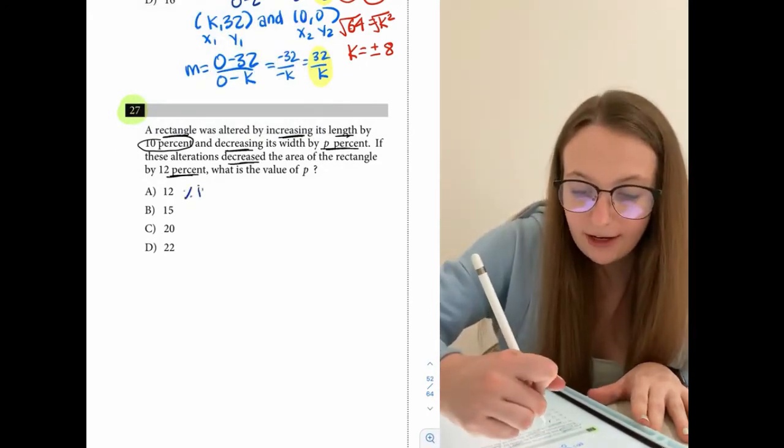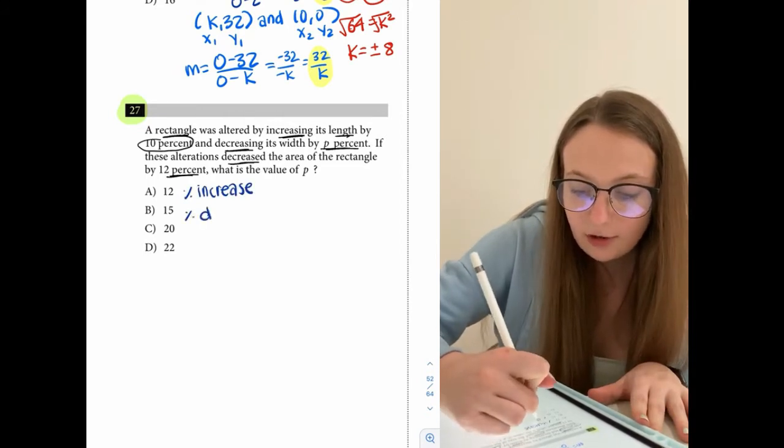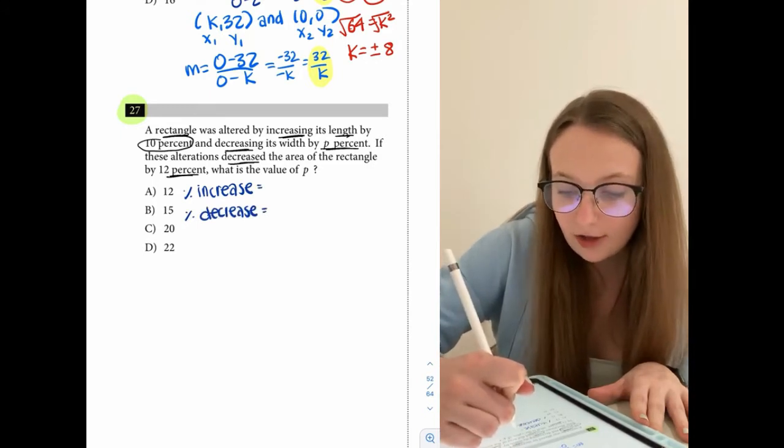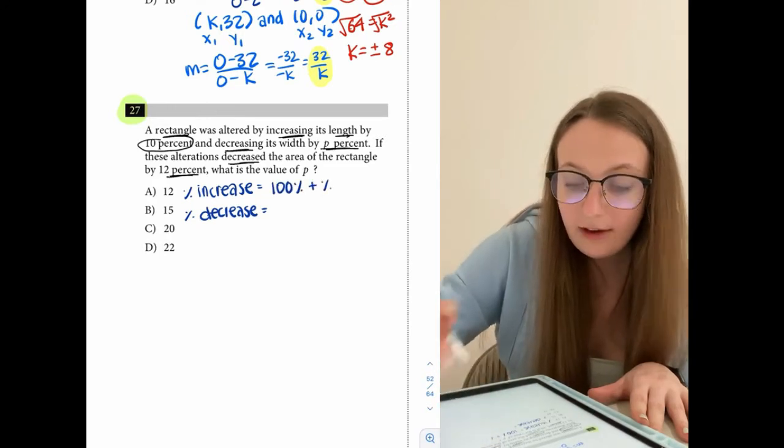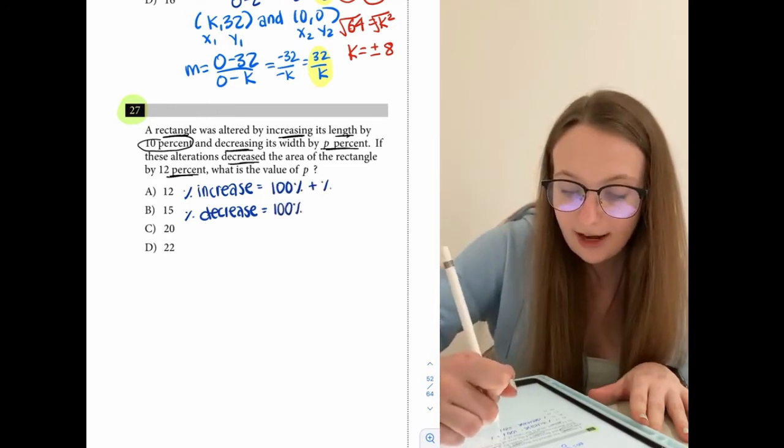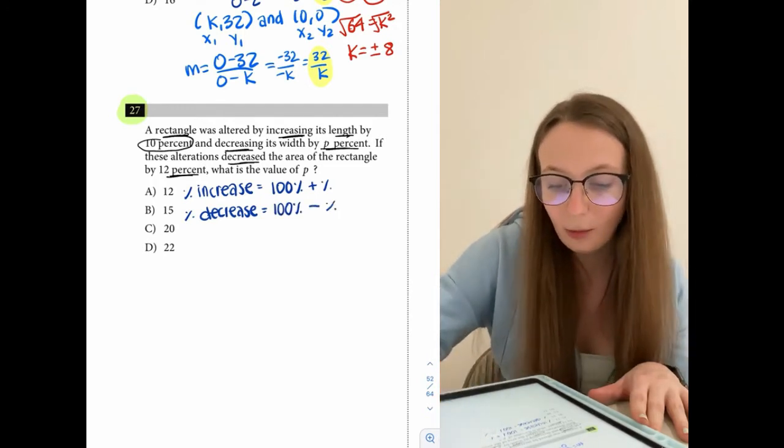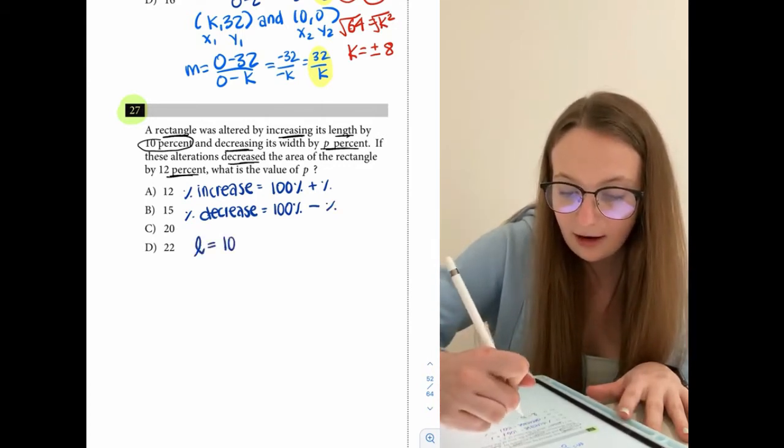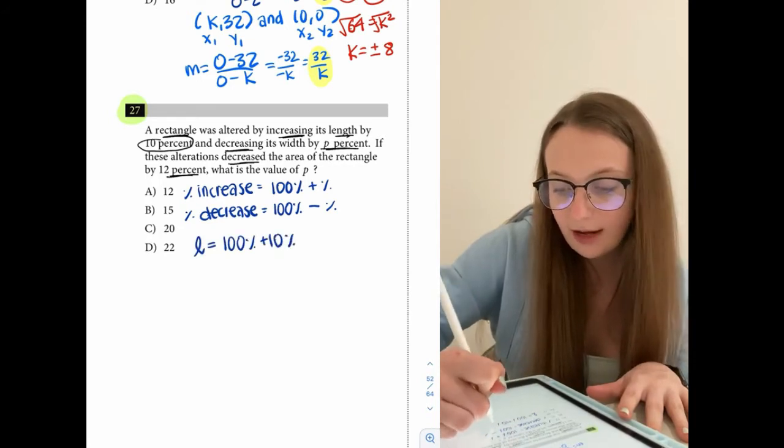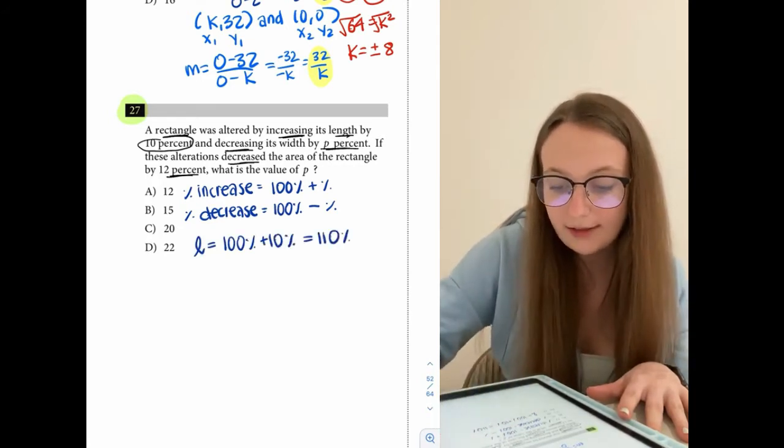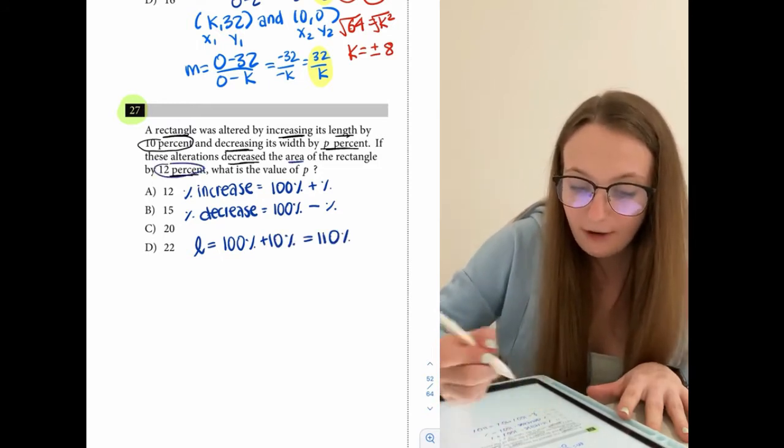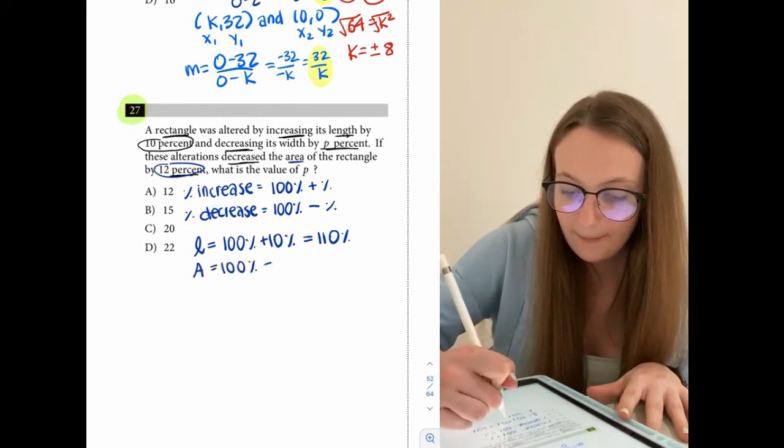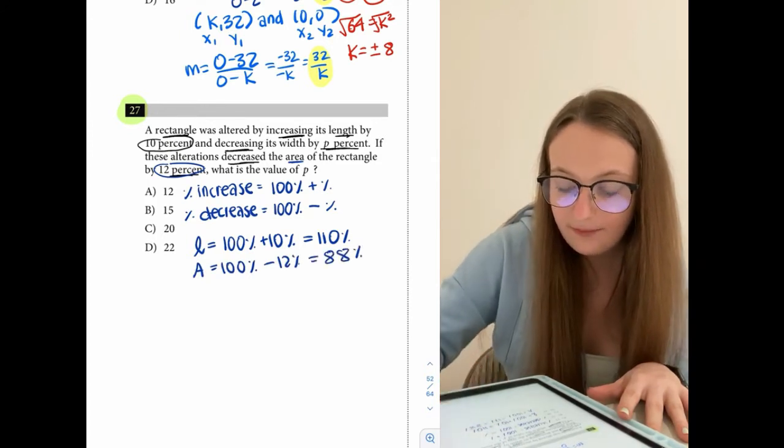So percent increase, how to model that and how to model percent decrease. So to model a percent increase, we take the percent and we add it to 100. So it's 100% plus the percent that we have. And percent decrease is we take 100% and from that we subtract the percent that we're working with. So basically if we know that the length increased by 10%, that means that the length is 100% plus 10%. So the length is equal to 110% what it was. And then if we know that the area decreased by 12%, we'll put that into the percent decrease. So the area then is 100% minus 12%. So that gives us 88%.